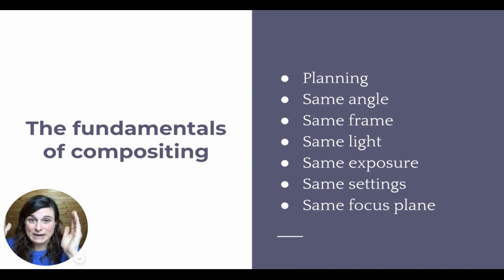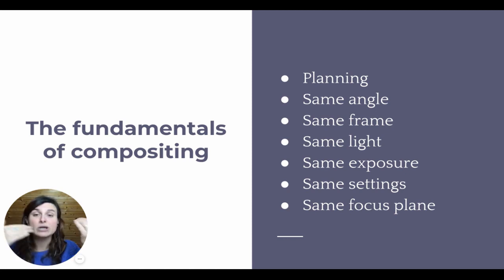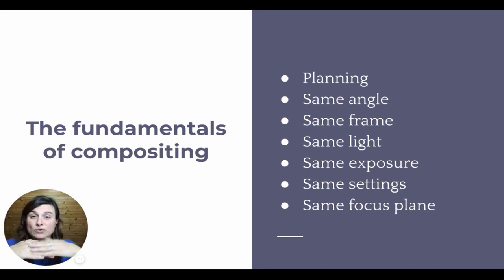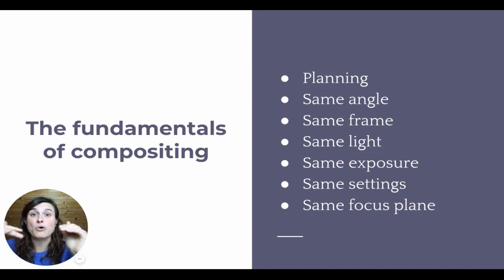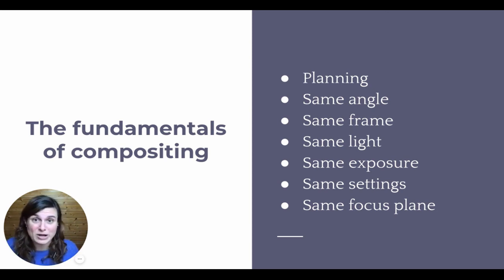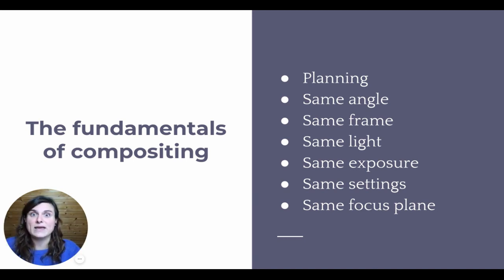In terms of fundamental concepts of compositing, the important thing is having the right mindset and planning for a compositing shot. If you know you're shooting a tricky subject that you'll need to merge in Photoshop, you need to shoot with that idea — which includes planning the shot using the right equipment like markers, same angle, same framing, same light, same exposure, same settings, and same focus plane. Because if you change focus, it's not going to be easy to merge and it won't look realistic. Same if you change light halfway through — you can't merge the images because the shadows and highlights will be different. This is very important and will make your job a whole lot easier in Photoshop.